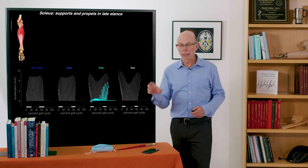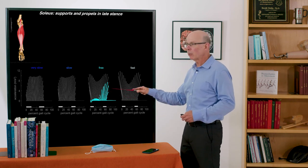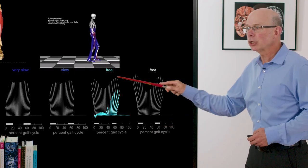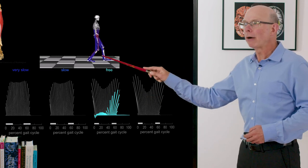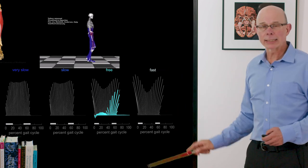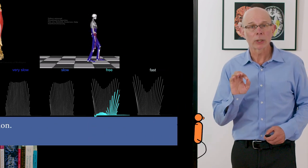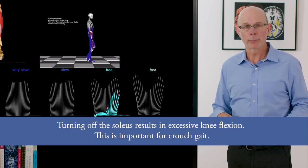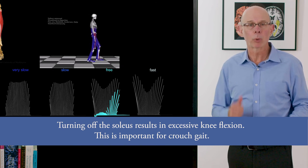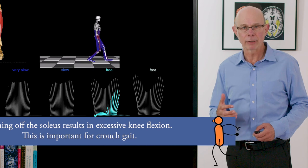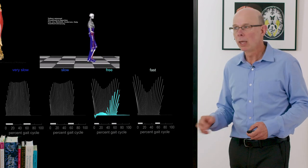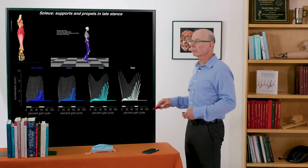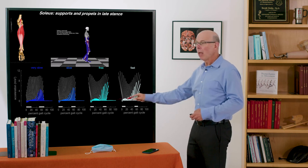Now soleus, remember it's on in late stance. It provides body weight support and forward propulsion. What you can see is this is such an important function that if you turn off the soleus, you get much excessive flexion there. And that's why we think the soleus is an important contributor. Weak soleus force is a contributor to crouch gait in many individuals because it's so important to body weight support. If it can't be activated and generating force because of weakness in cerebral palsy for example, we don't get this beautiful body weight support and end up with a crouch gait.